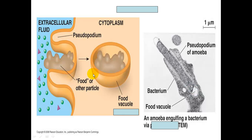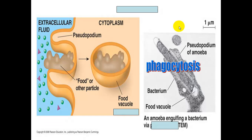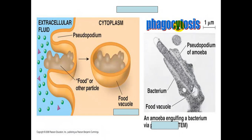In another example, here's outside the cell and inside the cell. A food or other particle is moving in — notice that the membrane surrounds it, and now we have a food vacuole. Here's an example of a food vacuole in an amoeba. That is called phagocytosis, which is a type of endocytosis.